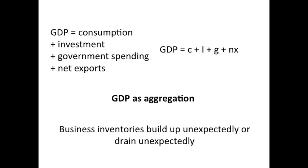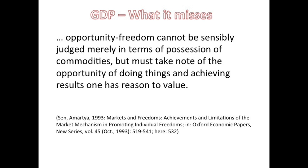A technical point: business inventories that build up unexpectedly or drain unexpectedly are not part of the GDP — they are taken out of the economic circle. Again, this point made by Amartya Sen in 1993 shows the development. We have to know these figures. For a long time, these ideas had been carried on without really understanding them — there had been discussions, they had been marginalized, nobody really paid attention. Then he got the prize of the Swedish Reichsbank for economics, the so-called Nobel Prize for economics.